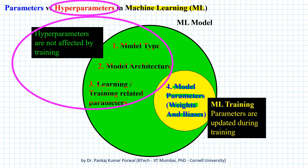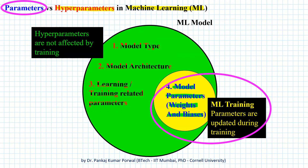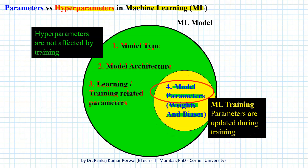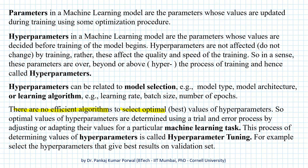That is the reason these parameters are called hyperparameters, and the parameters which are learned or updated during the training are simply called parameters. The best values of parameters are determined using the training process, but there is no efficient algorithm to select optimal or best values of hyperparameters. So the optimal values of hyperparameters are determined using a trial and error process by adjusting or adapting their values for a particular machine learning task.